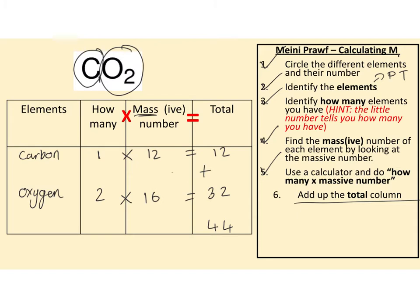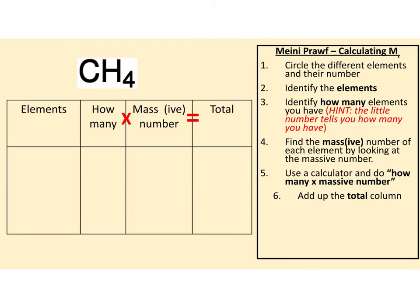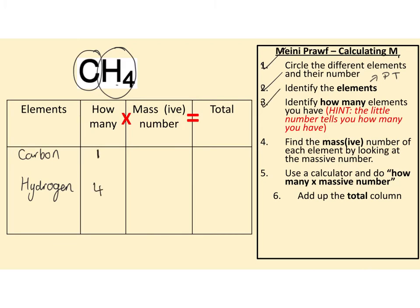Let me do another example. For CH4: following the success criteria, circle elements and numbers. Carbon and hydrogen - we've got one carbon and four hydrogens. The mass number for carbon is 12 and for hydrogen is one. One times 12 is 12; four times one is four. Add up the total - the total Mr of CH4 is 16.